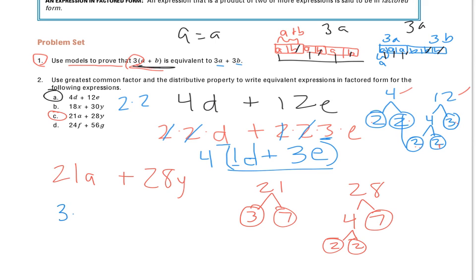So 21 is 3 times 7 times A, plus 2 times 2 times 7 times Y. Because again, we're doing the prime numbers, because when we multiply those, 2 times 2 times 7, we'll get our 28. Now I'll find what's common between them, and I see that both sides share a 7. So that stays on the outside of my parentheses, because that's the greatest common factor. And now I'm going to put it back into distributive form.